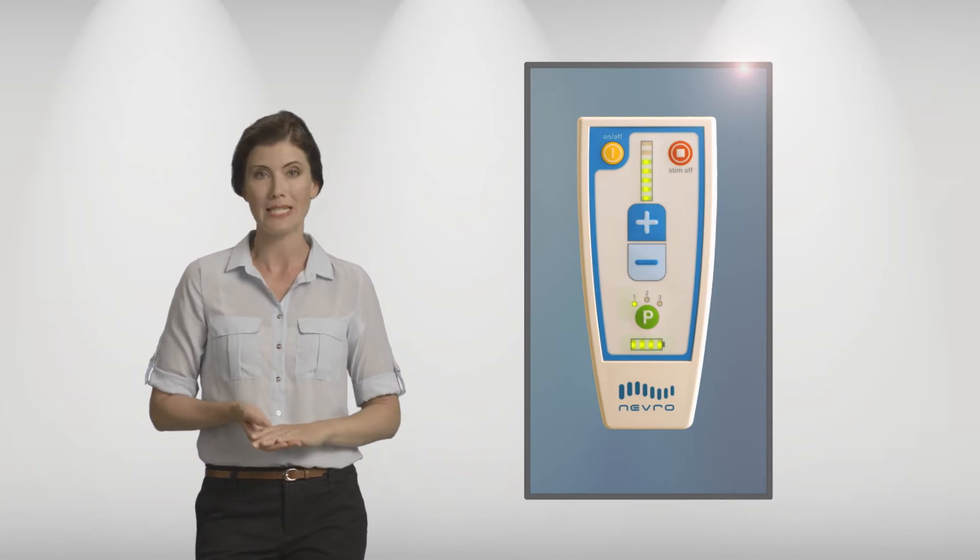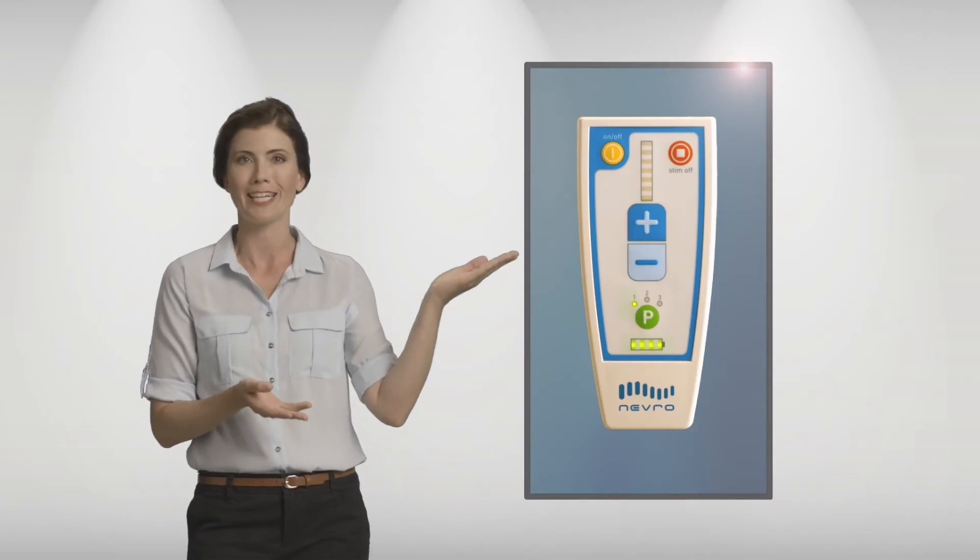One long beep indicates there is a connection with your device. If the remote cannot connect with the battery, it will emit three beeps and turn off. If this happens, try moving the remote closer to the battery or changing the orientation and trying again.